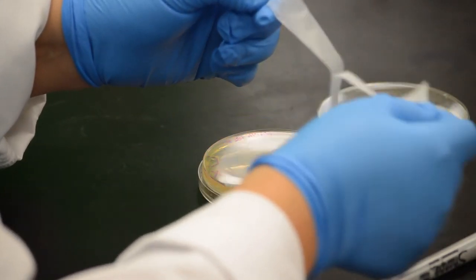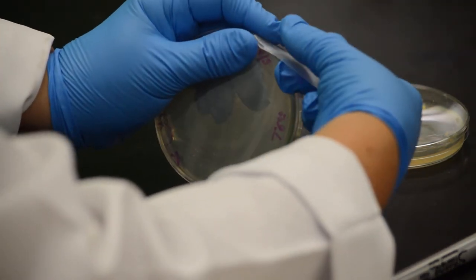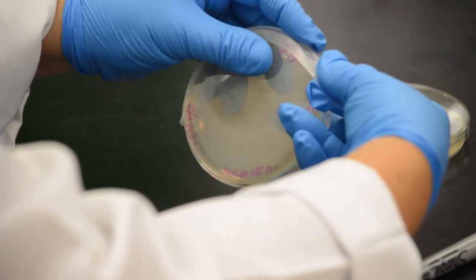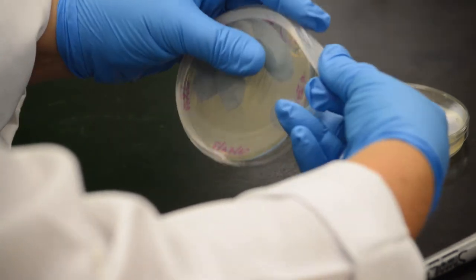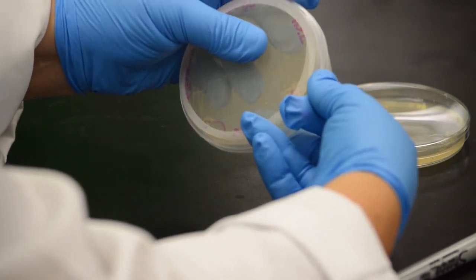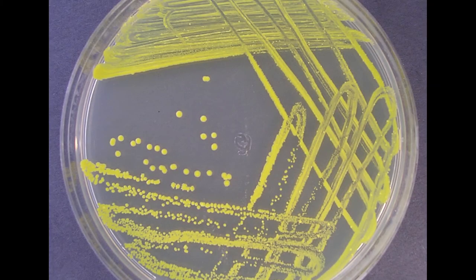Seal the plate with a strip of parafilm. Store the plate upside down, in an inverted position, in the container for your lab section. Why upside down? Bacteria respire, and with respiration, water is released. If the petri plate is stored lid up, condensation will develop and raindrops will form on your plate. The free water will then allow the bacteria to spread over the plate, and thus no isolated colonies will form.